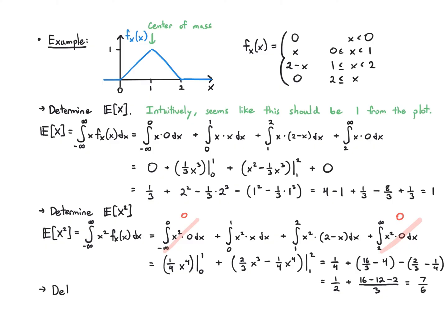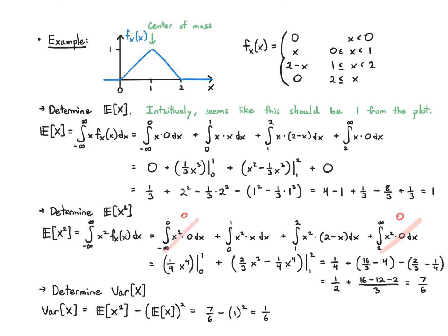Finally, for the variance we use the alternate formula: Var(X) = E[X²] − (E[X])². We already have both values: 7/6 − 1² = 7/6 − 1 = 1/6. So the variance is 1/6.